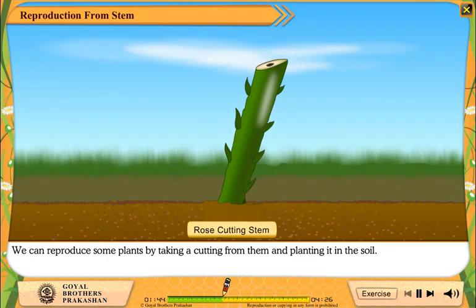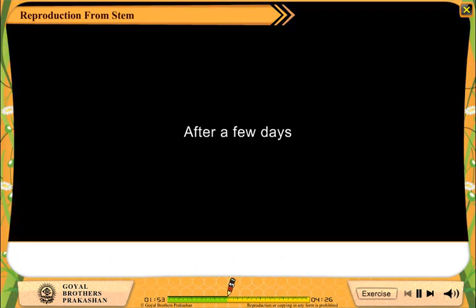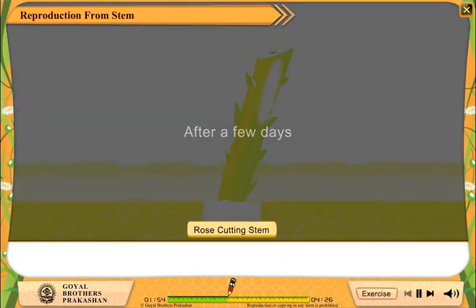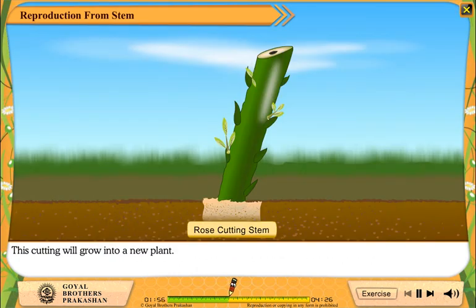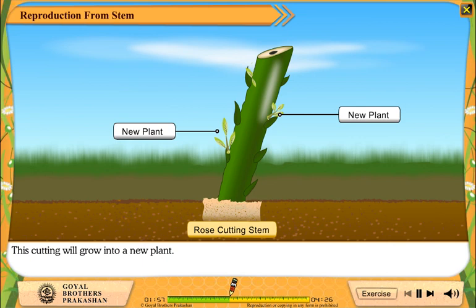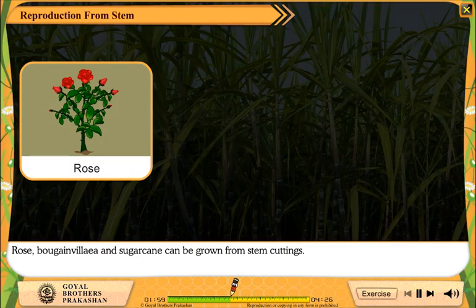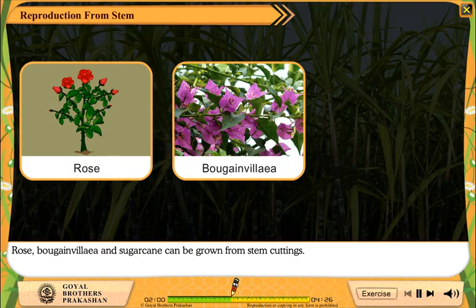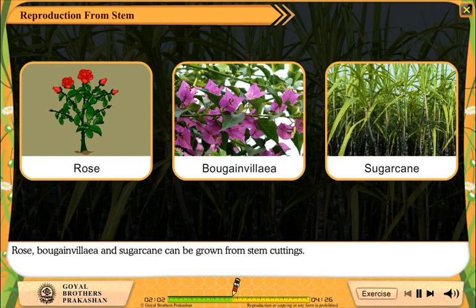We can reproduce some plants by taking a cutting from them and planting it in the soil. After a few days, this cutting will grow into a new plant. Rose, bougainvillea and sugar cane can be grown from stem cuttings.